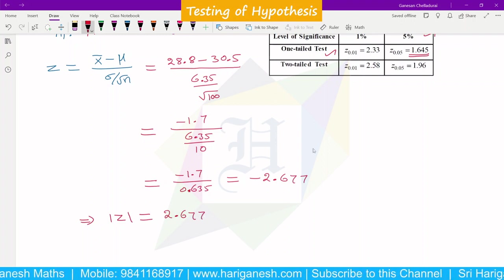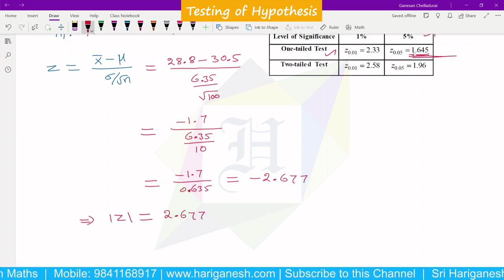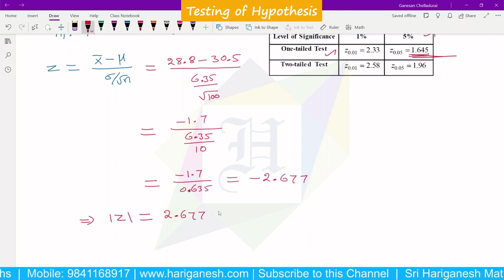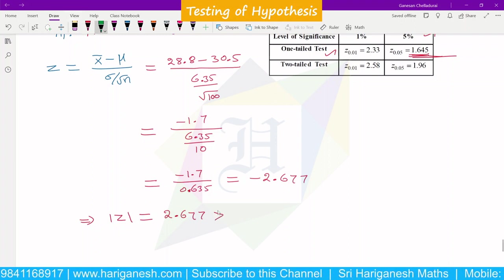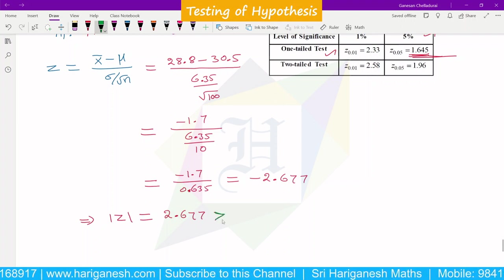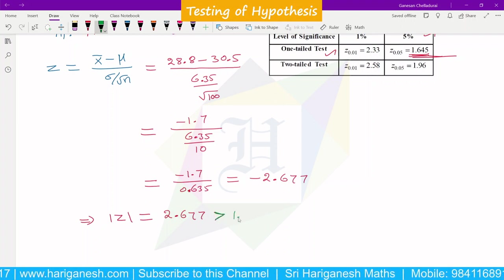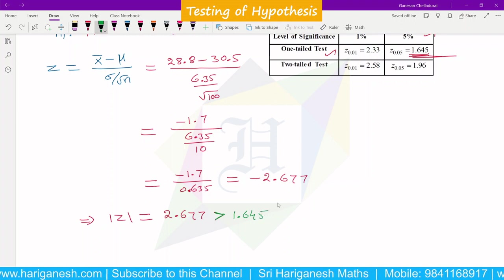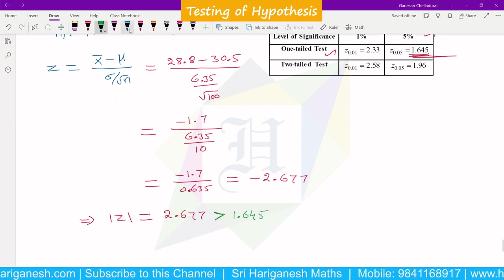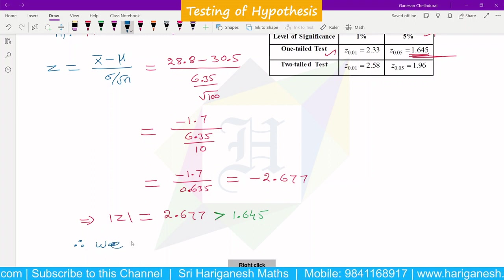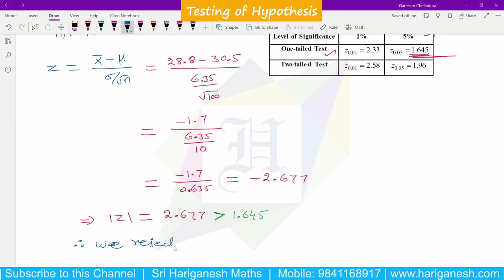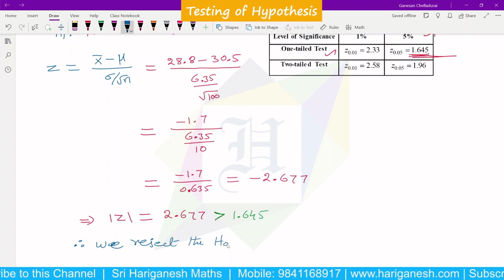The calculated value is 2.677, but the table value is 1.645. The calculated value is greater than the table value. Therefore, we reject the null hypothesis.